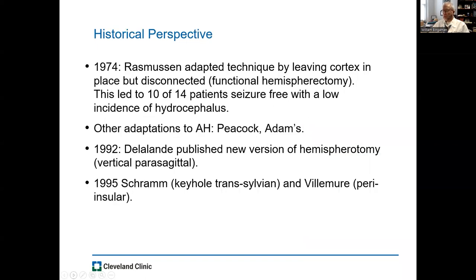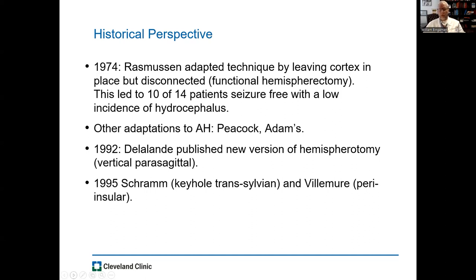Because of this, in 1974, Theodore Rasmussen published a series of patients who had their hemisphere disconnected but left in place, and this was called functional hemispherectomy. This was also a successful operation, very similar to the anatomic hemispherectomies. The theory was that the empty cavity left after anatomic hemispherectomy would shift around and cause micro bleeding, leading to hydrocephalus and superficial cerebral hemosiderosis. Rasmussen figured that by leaving some tissue behind in the frontal and occipital poles, it would prevent this shifting and bleeding and decline the incidence of SCH.